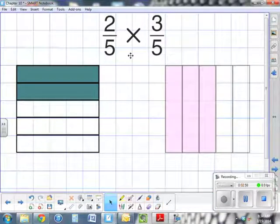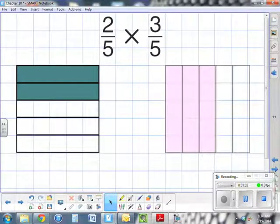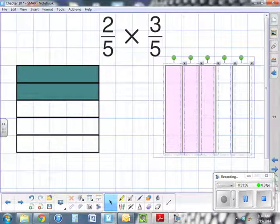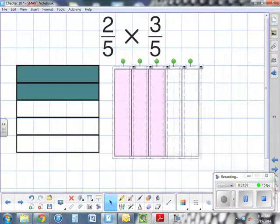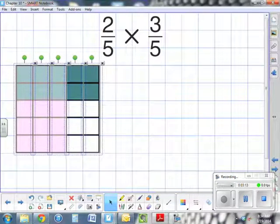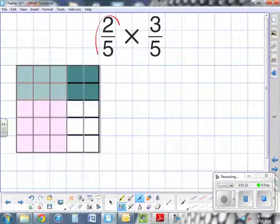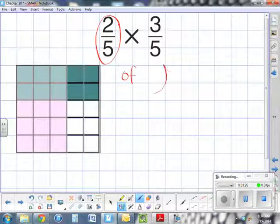Using this method, I'm going to superimpose one of the fraction models over the other. So I'm going to go ahead and move this over. Now if you look carefully, there's a section that is shared between the two fractions. Remember, let's go back a step: two-fifths of three-fifths.